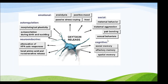Cognitive factors include social memory, olfactory memory, and spatial memory. Neuroendocrine factors involve the attenuation of the HPA axis response from the hypothalamus, and local amino acid and noradrenaline release, which can cause oxytocin release.